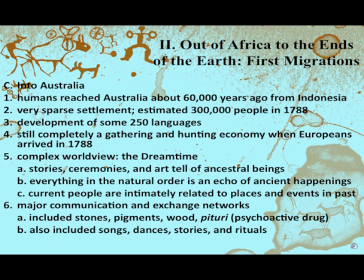Humans reached Australia around 60,000 years ago from Indonesia, with a very sparse settlement — estimated at 300,000 people in 1788 CE. Australia has a large desert in the middle, so people lived on the outskirts. About 250 languages developed, spreading from Madagascar to the Pacific Islands, with language roots dating back to parts of China. When Europeans arrived in 1788, Australians were still completely a gathering and hunting economy. They also had the complex worldview of the Dreamtime, which could appear on the summer reading exam.